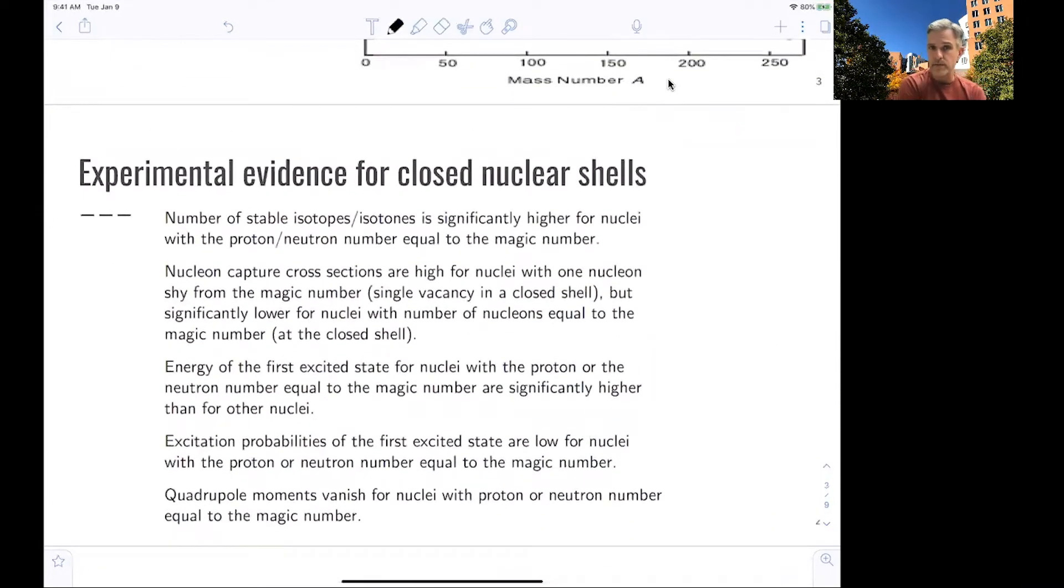The experimental evidence is numerous. We find that the number of stable isotopes or isotones is significantly higher for nuclei with a proton or neutron or both numbers equal to one of those magic numbers. The nuclear capture cross-section, meaning the likelihood to capture a proton or neutron, are high for nuclei where exactly one nucleon is missing from a magic number, but significantly lower for nuclei with this number of nucleons equal to the magic number, meaning there is this concept of a closed shell.